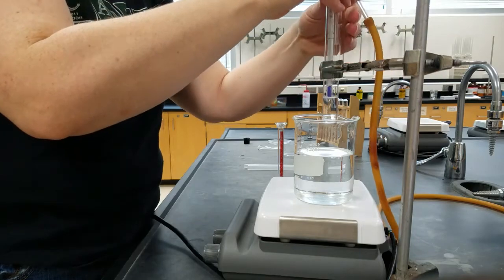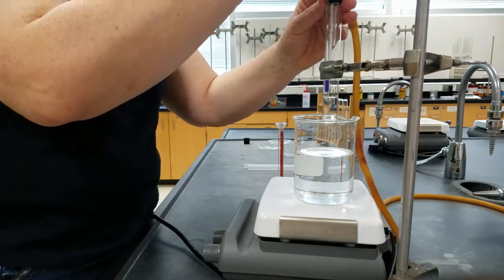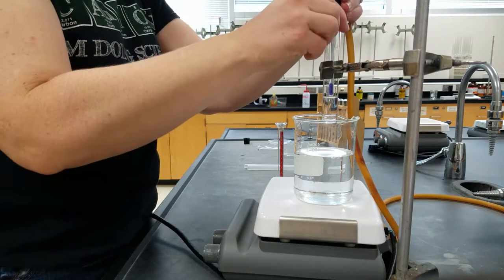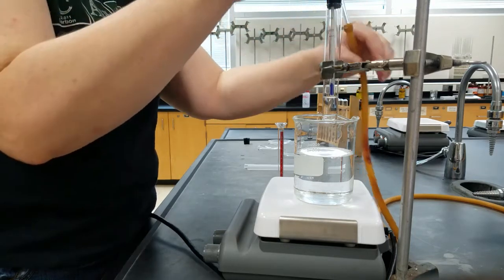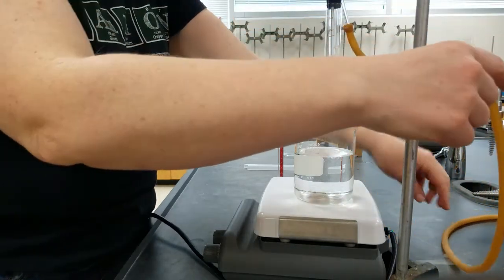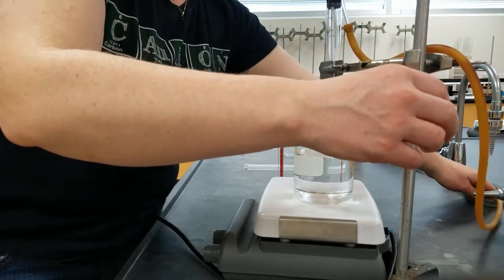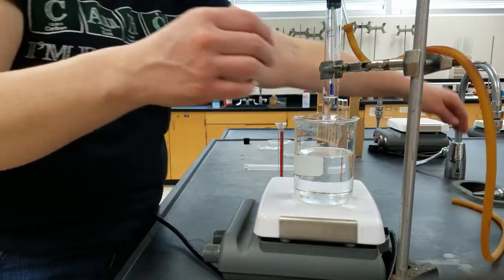We want to add the thermometer into the test tube so that the bulb is just a little bit above the liquid level. And that way we are determining the temperature of the vapor of the liquid.